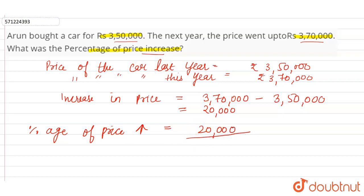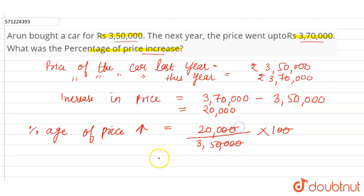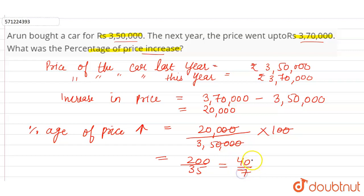The price of the car last year was 3,50,000. So percentage increase = 20,000 divided by 3,50,000 multiplied by 100. The 20s cancel, giving us 200 divided by 35. The common factor of 200 and 35 is 5, so this simplifies to 40 by 7.